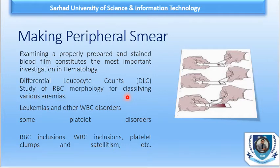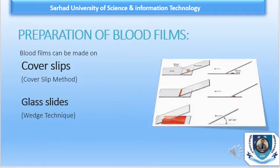Similarly, we study other defects like rouleaux formation, agglutination, fragmentations, red blood cell inclusions, WBC inclusions, platelet clumps, and satellitism of platelets. These are the most important things for which we are making a smear. The peripheral smear is a diagnostic tool for the diagnosis of any sort of anemia, leukocytosis, or thrombocytopenia.